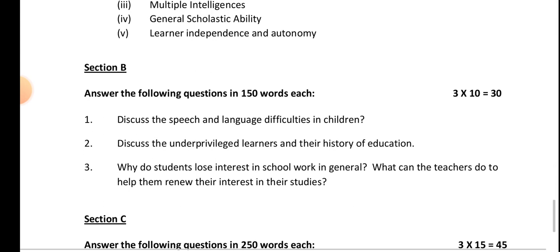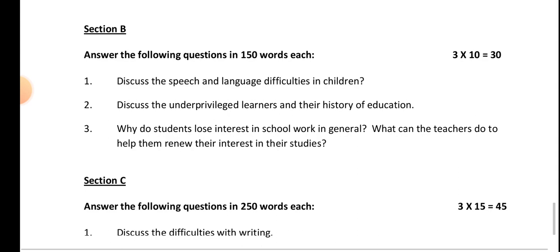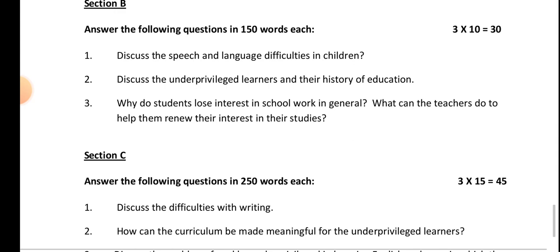In Section B, answer the following questions in 150 words each, which is 3 x 10 = 30 marks. Discuss the speech and language difficulties in children — what is the difference in speech for an autistic child and the words he pronounces that he doesn't understand. Also, discuss the underprivileged learners and the history of education — who are underprivileged learners, and how they learn and how their education works.